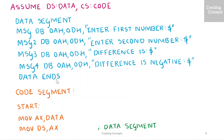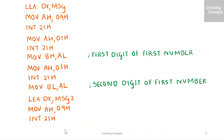We end the data segment and begin the code segment with a label 'start'. Here first we initialize the data segment and display the first string in order to enter the first number using function code 09H. I'll read the number digit by digit using function code 01H. The higher digit of the first number is stored in BH and the lower digit is stored in BL.